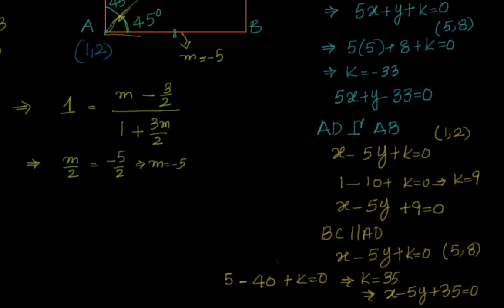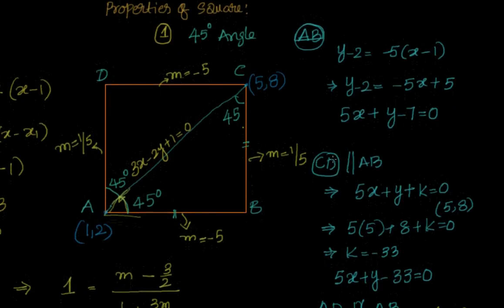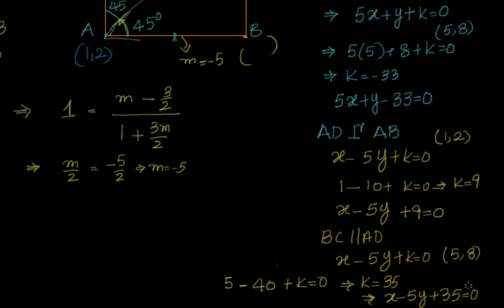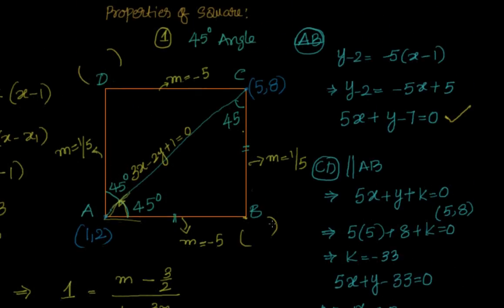We now have all four equations. To find the remaining vertices, solve two equations simultaneously. Take AB (5x + y − 7 = 0) and BC (x − 5y + 35 = 0) together to find vertex B. Solving them gives B = (0, 7).